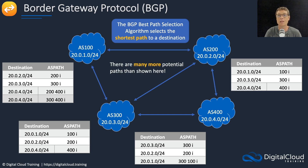It's worth noting that there are many more potential paths than shown here. For example, we could go from AS 400 to 200, then to 300 and then 100, and that might actually be the best path. We can't really tell just from this diagram because we can't see the bandwidth of the links, the geographical distances, and therefore the latency and various other parameters.